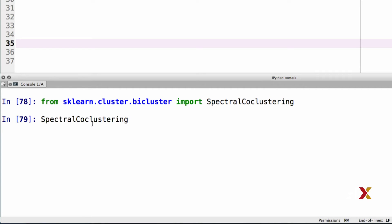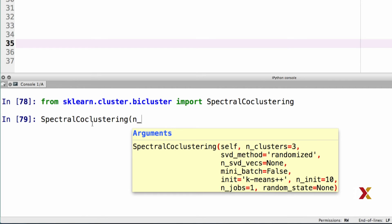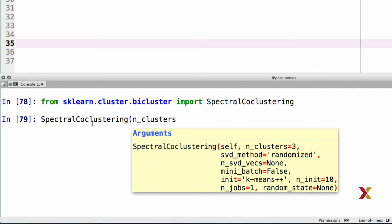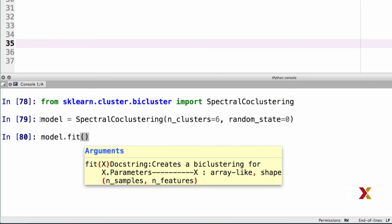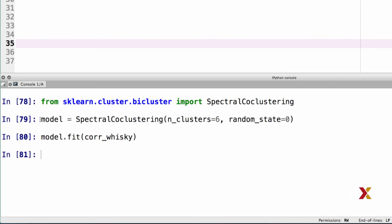The first argument is going to be n_clusters, which is the number of clusters we'd like to specify. In this case, we'll set that equal to six. We'll also specify the random_state to be equal to zero. This is a parameter that we don't have to care about too much at this point. We will capture this as our model. We've now created the model object. The second step is to fit the model using data from the core whisky correlation matrix.